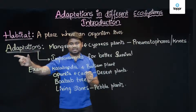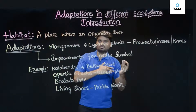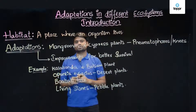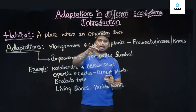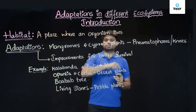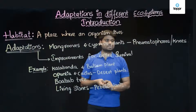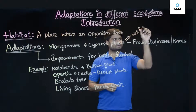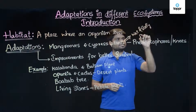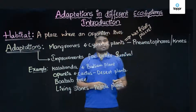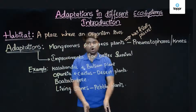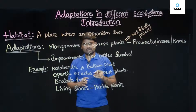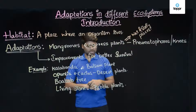What is the purpose of adaptation? The purpose of adaptation is for better survival. Now we will take some examples to better understand what kind of changes organisms undergo. The first example is mangroves and cypress plants. Where do you find them? They are usually present in wet and salty places, meaning the land into which their roots have gone is all wet or waterlogged.